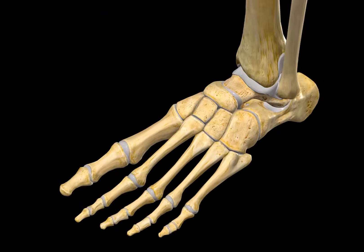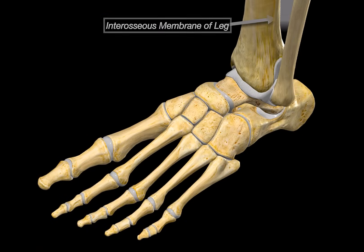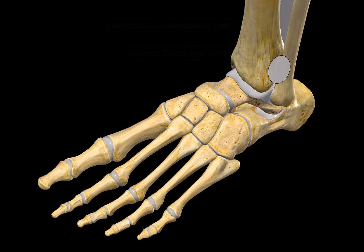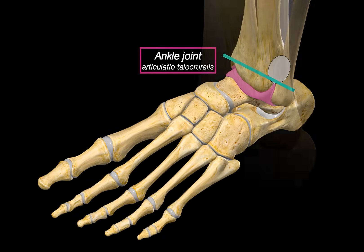In the previous video on the tibia and the fibula, we covered the interosseous membrane and the distal tibio-fibular joints. We have followed the joints down to this point. The next joint after that is the talocrural joint, or simply the ankle joint.